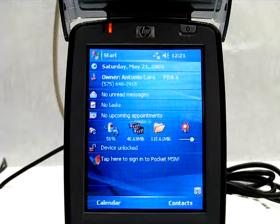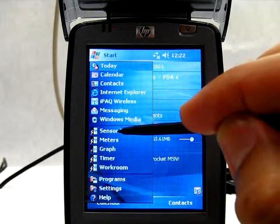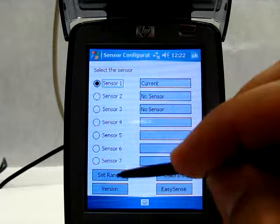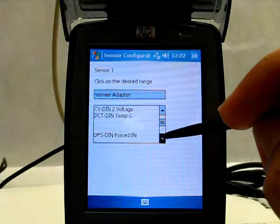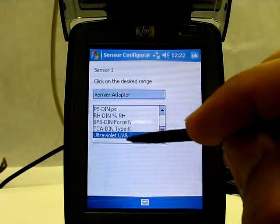Now, let's take a look at the experimental setup. The first thing we have to do is configure the PDA to receive the measurements from the sensor. Turn on your PDA and press start and then sensor configuration. Look and if in the box next to sensor 1 it doesn't say Vernier Adapter, press set range and find Vernier Adapter at the end of the list. Click on it and you are ready to go. Press OK and OK again.